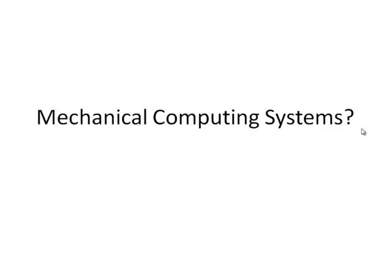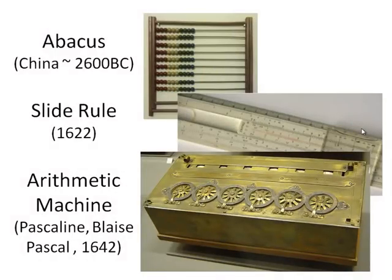In terms of thinking about what a computer is, let's consider some old computing and calculating devices and see what we think of these. Here are some early calculating devices. The abacus — well over 3,000 years old — has been used to perform calculations. It exists in different forms; that's a kind of western form. Basically, it's a mechanical device used to represent numbers, and you can use it to perform additions, though a person is still required to actually perform the calculations.